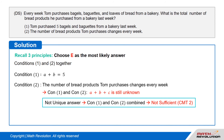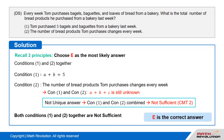Many questions in the actual exam involve cases in which variables are stated either directly or in the words themselves. The two cases appear in the exam with similar frequency. Both conditions 1 and 2 together are not sufficient, so E is the correct answer. Answer: E.